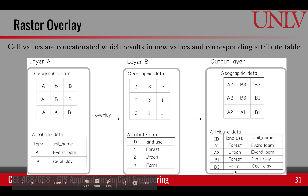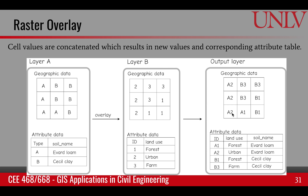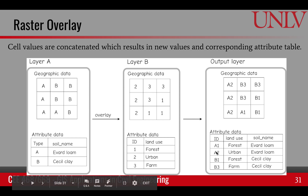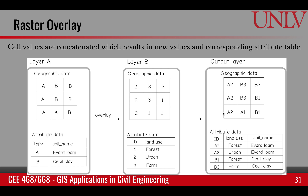The attribute table is created based on those combined IDs. We have A1, A2, B1, and B3 — only four combinations that occur — and we have the land cover information as well as the soil information for each. This way, we have taken two separate raster layers and combined them into an output overlay layer.